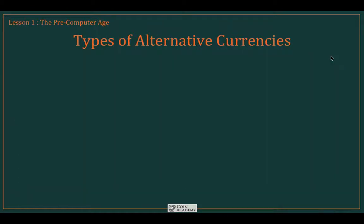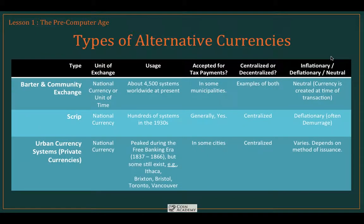We're going to wrap up this pre-computer age discussion by taking a quick look at a summary chart, showing the various types of alternative currencies that remained viable at the time. Some of these are still actually in existence today. Barter and community exchange networks have been around forever, and at present there are more than 4,500 of these formal systems in use worldwide.